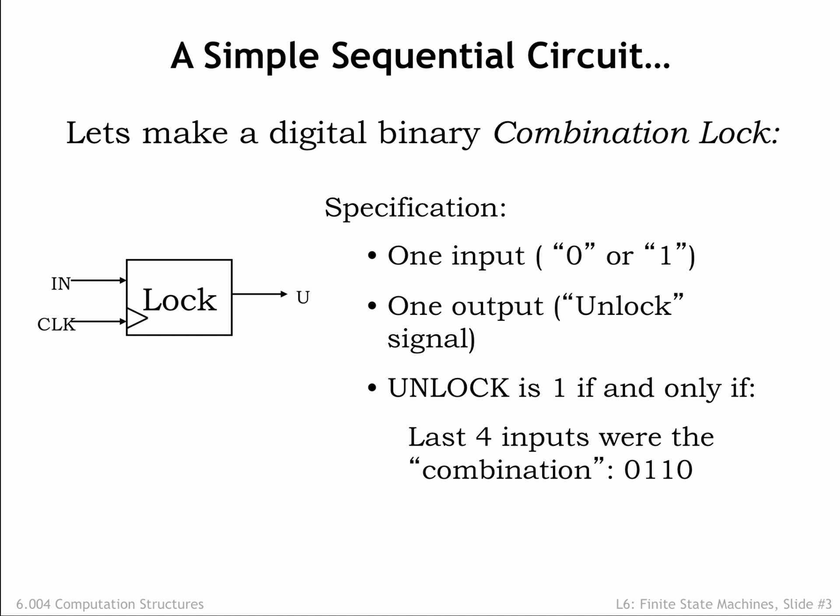As an example sequential system, let's make a combination lock. The lock has a 1-bit input signal where the user enters the combination as a sequence of bits. There's one output signal, unlock, which is 1 if and only if the correct combination has been entered. In this example, we want to assert unlock — set unlock to 1 — when the last four input values are the sequence 0, 1, 1, 0.